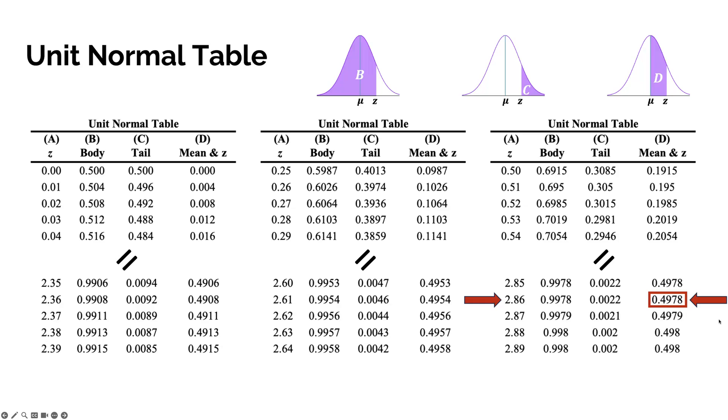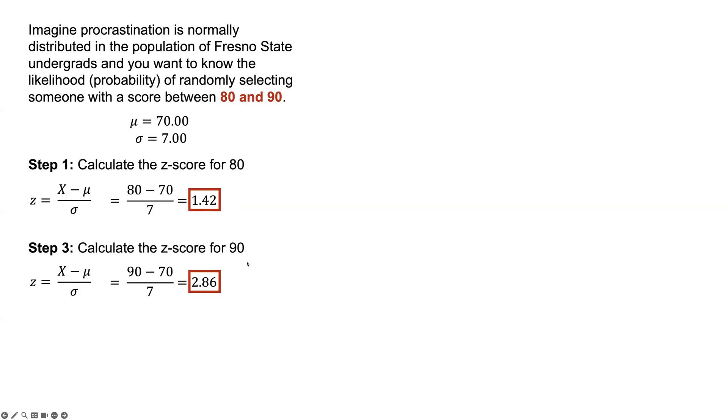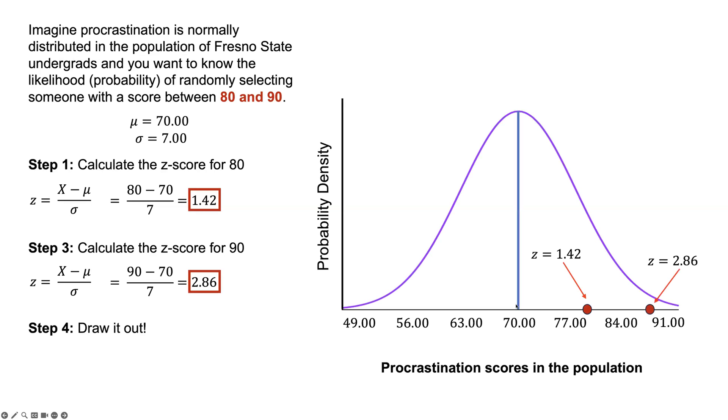I'm going to show the example where we calculate two z-scores and look for the distance between them. There's two ways to do it. We're going to look at the probability of randomly selecting someone with a score between 80 and 90. We need to calculate our z-score for 80, which is 1.42. We need to calculate the z-score for 90, which is 2.86. You want to draw it out. This is where our two z-scores fall.